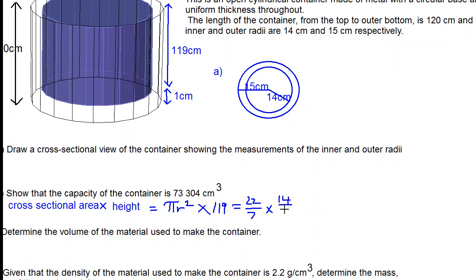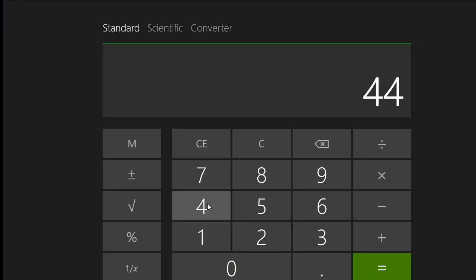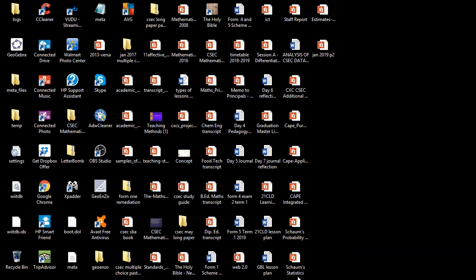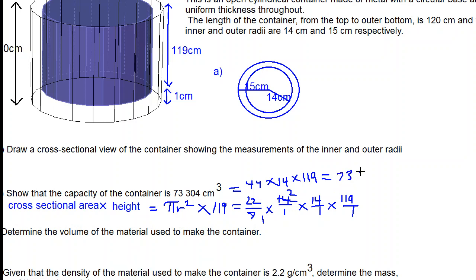We have 22/7 multiplied by the radius, which is 14. We are using the inner radius, the radius of the blue cylinder. So we have 22/7 × 14² × 119. We cancel 7 into 7 is 1, 7 into 14 is 2. Therefore, we have 22 times 2, which is 44, multiplied by 14, multiplied by 119. We work this out in our calculator. 44 times 14 times 119 equals 73,304 cm cubed.